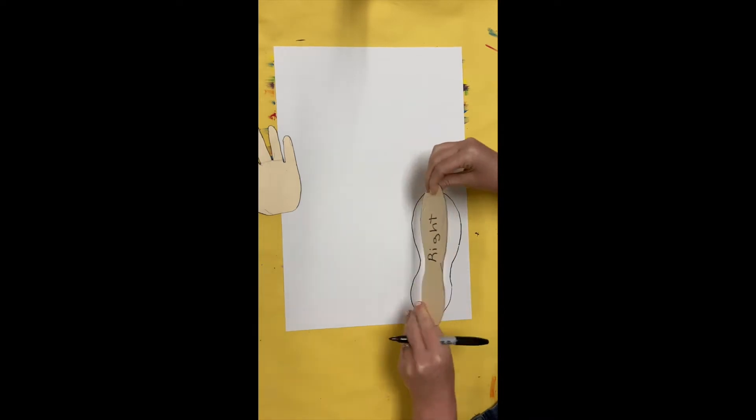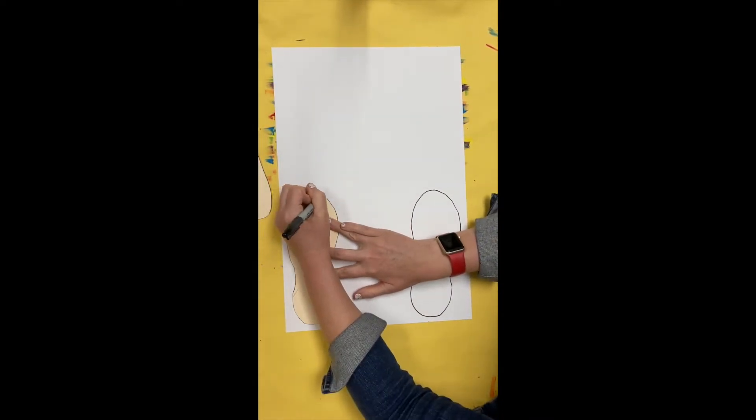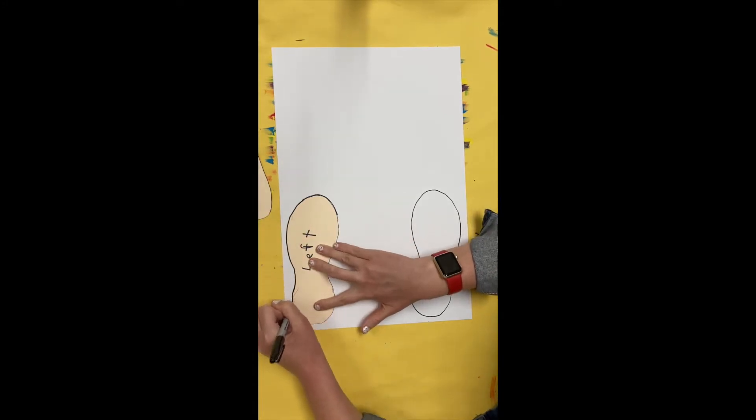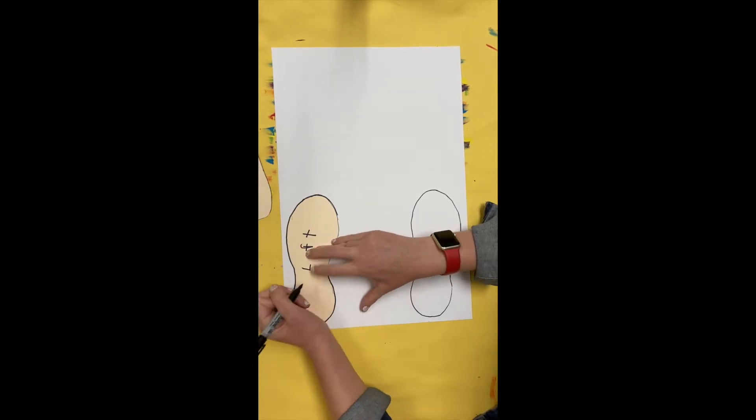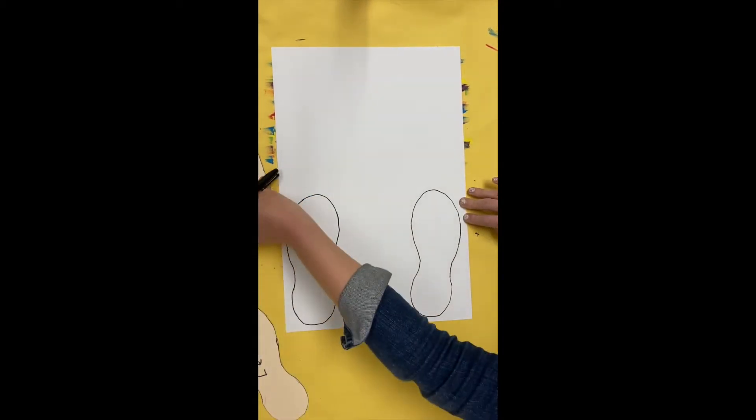On the bottom right, I'm going to trace the right side, and on the bottom left, I'm going to trace the left side of the foot. Hold the paper with your helper hand so it doesn't move as you are tracing.